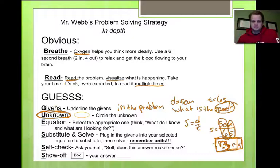And then you guess. It's obviously not a guess, but that's just what we're saying. So you guess by underlining the givens, circling what you're looking for, the unknown. The equation is when you select which equation or relationship you're going to use. You substitute and solve. You put in the numbers. You self-check, you ask yourself if it makes sense. And lastly, you show off by boxing your answer. That's how you solve a problem in physics. You can relate that to real life. I expect you to do that at some point, and this is what we're going to use the rest of the year, so get used to it.